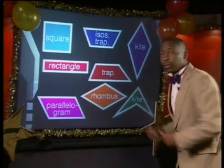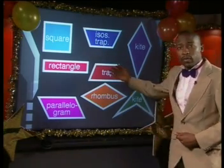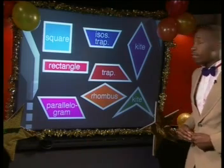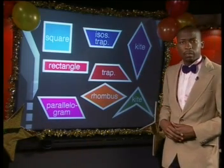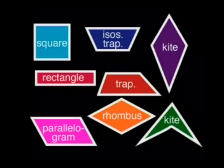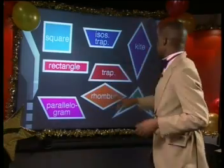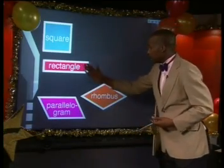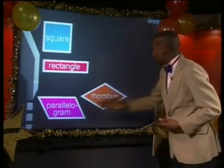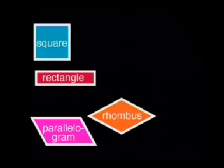Which of these shapes have opposite angles equal? The answer is the square, the rectangle, the parallelogram, and the rhombus.